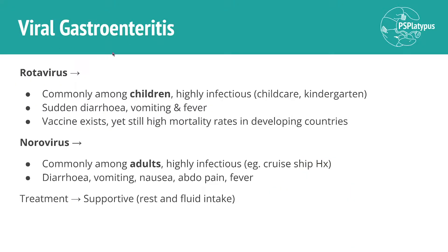And we're on the final slide — viral gastroenteritis. The nausea, vomiting, and diarrhea from a viral cause — we might just refer to it as gastro. We've got two viruses: rotavirus — think kids — and norovirus — think adults. Both are very infectious; you only need a few virions to actually cause infection. Think of children in childcare or kindergarten spreading it around, and for norovirus, think of a cruise ship where everyone's crammed in close quarters and they all get infected.